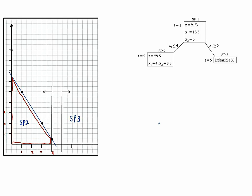So x2 equals 1 half means you're going to add two new constraints. Anyone know the constraints you need to add? x2 less than or equal to 0, and x2 greater than or equal to 1. So now we are not adding constraints on the x1 axis — we are adding constraints on the x2 axis.